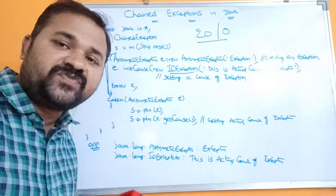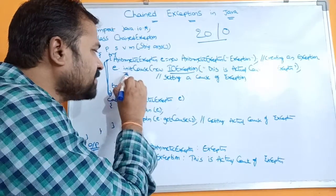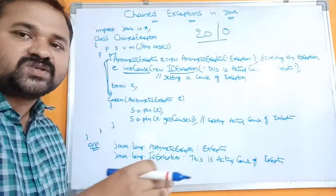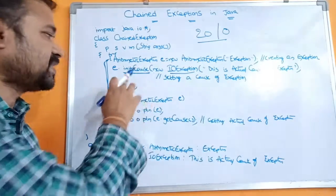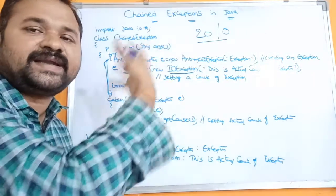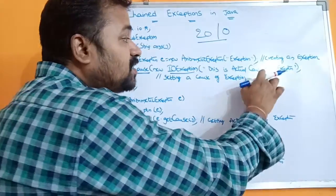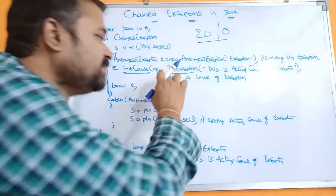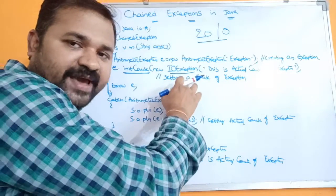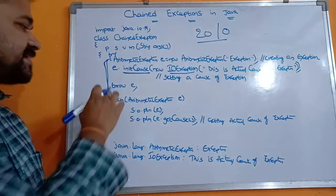The major reason for the ArithmeticException is an IO operation. We specify that information using the initCause() method. By using initCause(), we are setting the cause of the exception — why we are getting this ArithmeticException. The statement is: e.initCause(new IOException("This is the actual cause of exception")). So we are providing the root cause information with the help of initCause().